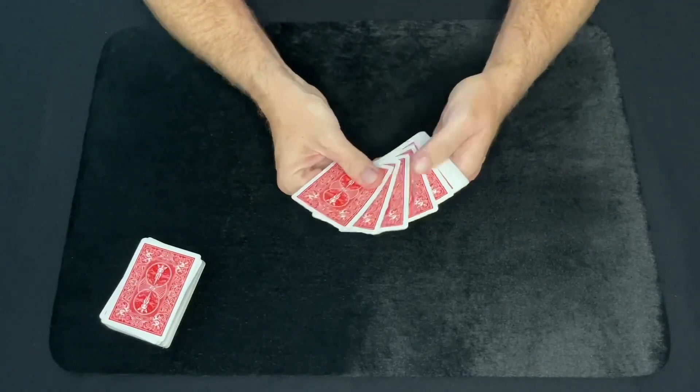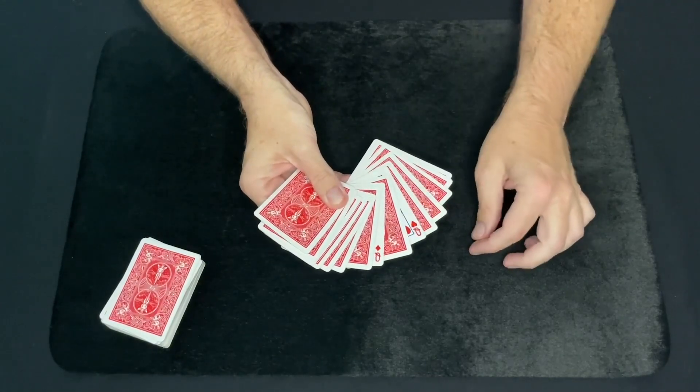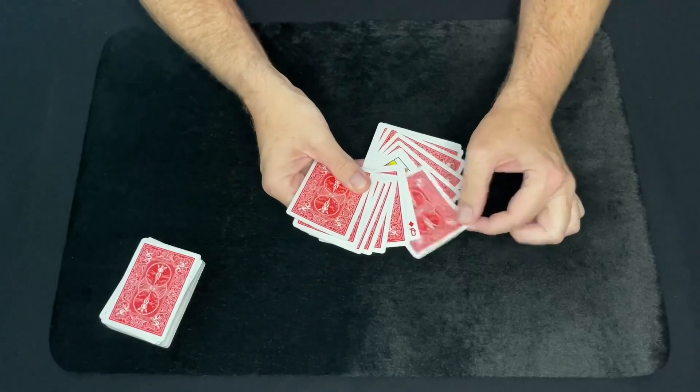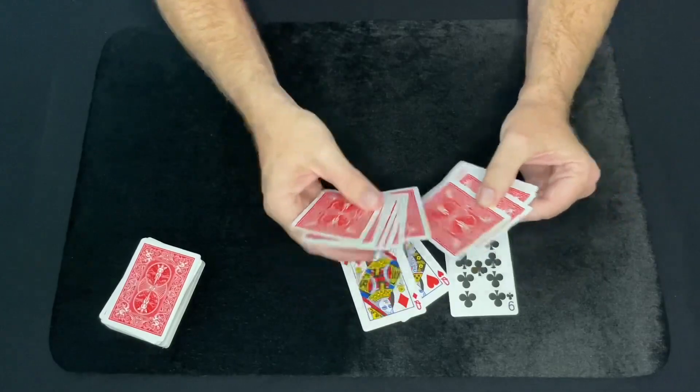And that automatically places the two red queens in between whatever card was on the bottom of the stack of 13. And boom, look at that. It's their selected card.